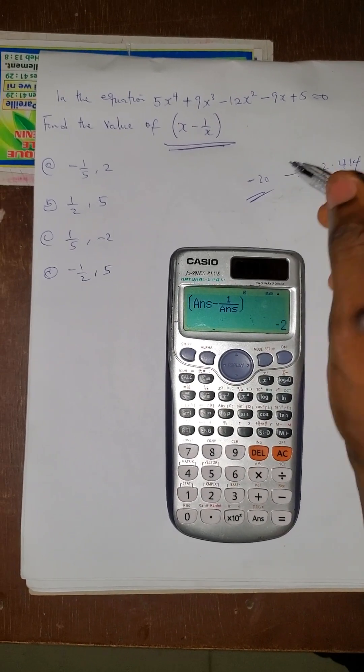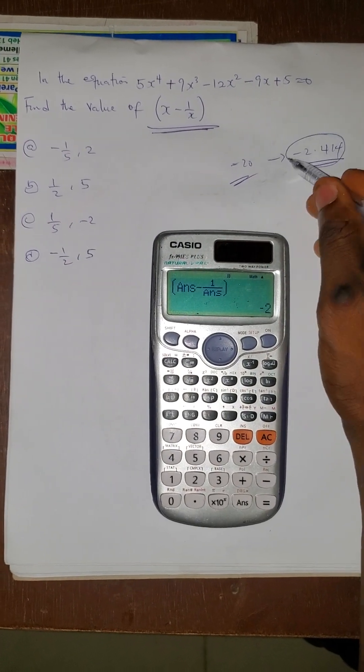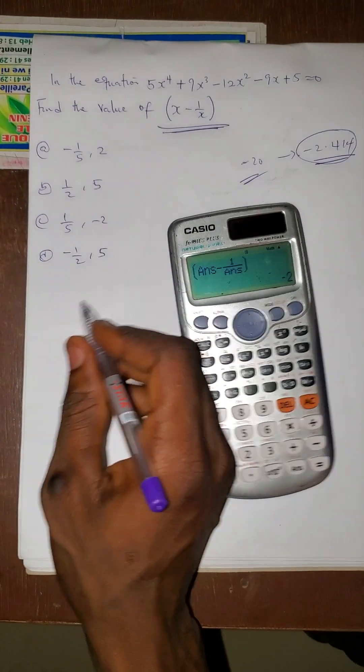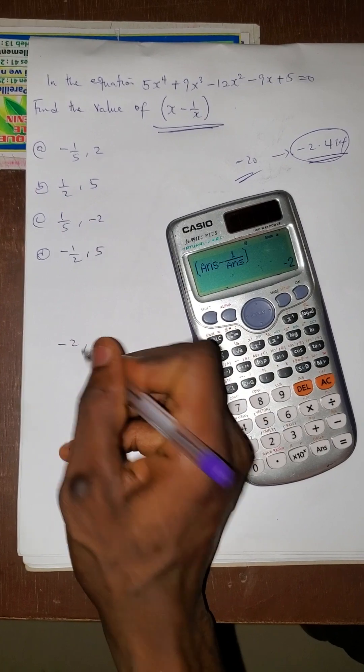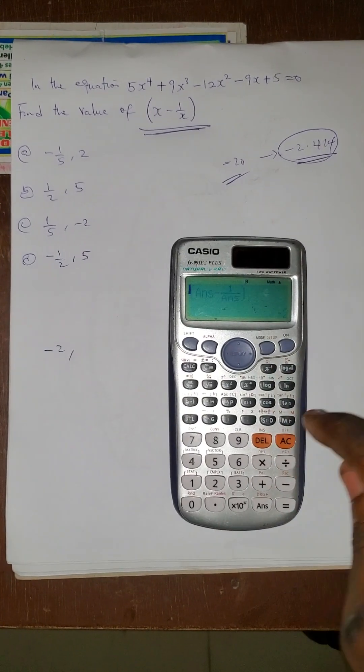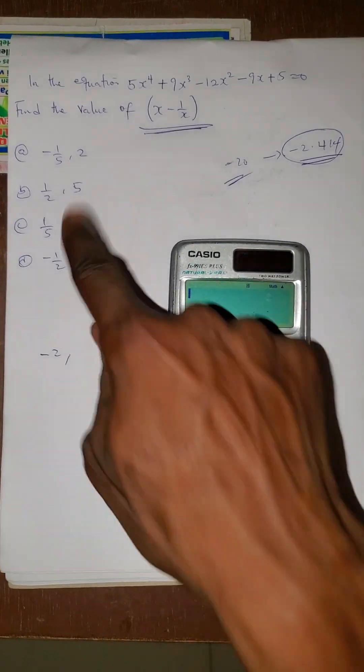When I use this value as x, it gave me one value to be -2. So now let me solve for the next one. How do I solve for the second value?